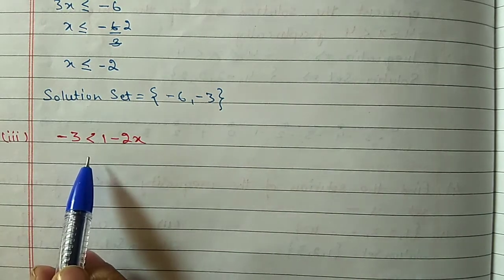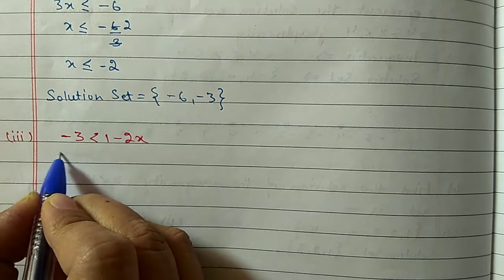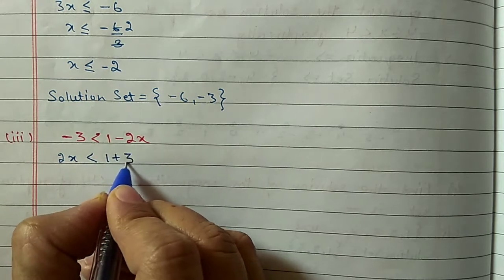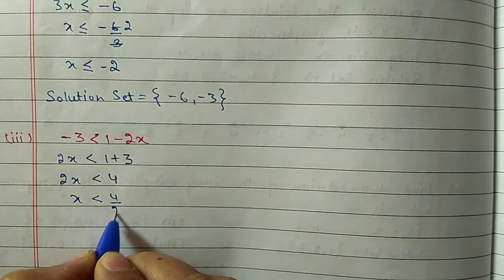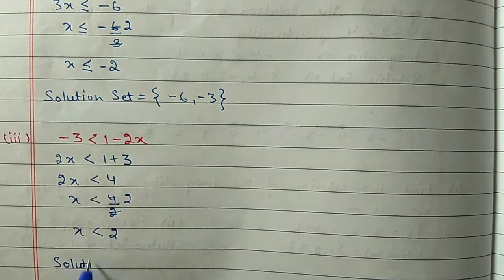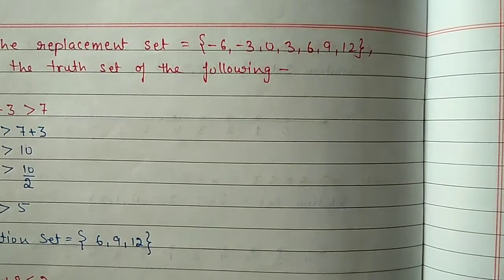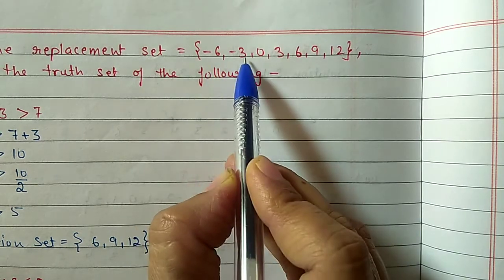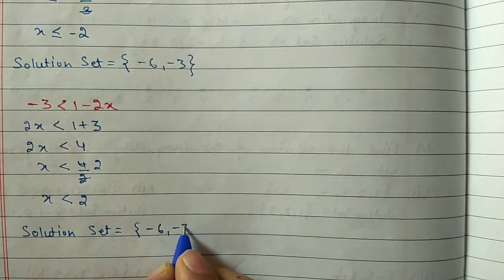Third part: minus 3 less than 1 minus 2x. Shift minus 2x to the left and minus 3 to the right: 2x less than 1 plus 3, so 2x less than 4, meaning x less than 2. From the replacement set, numbers less than 2: minus 6, minus 3, and 0. Solution set is {-6, -3, 0}.